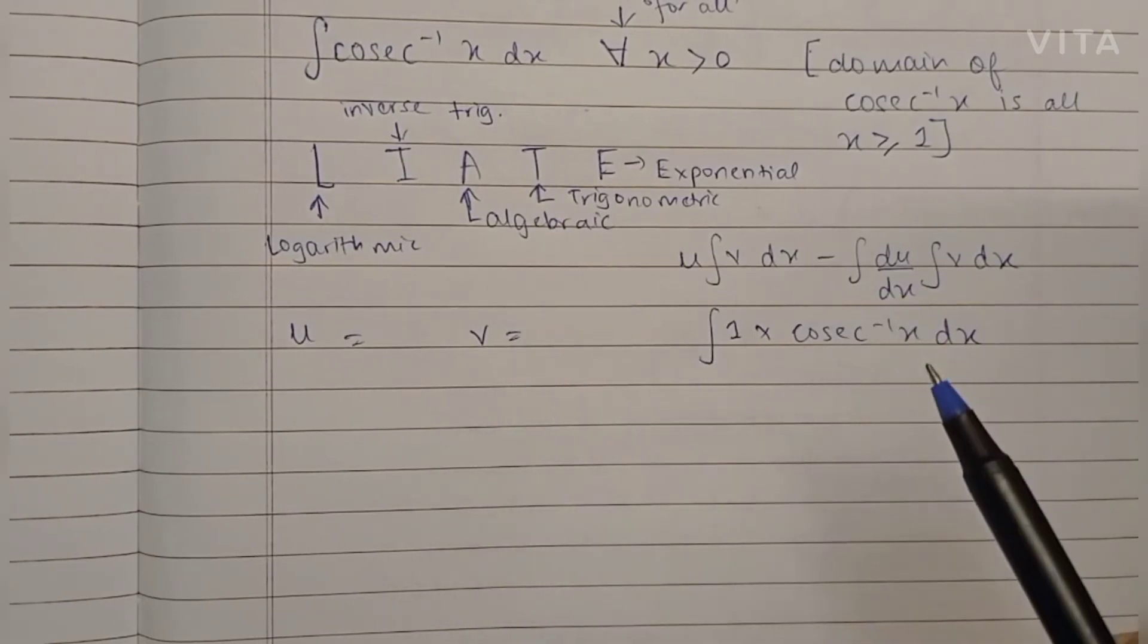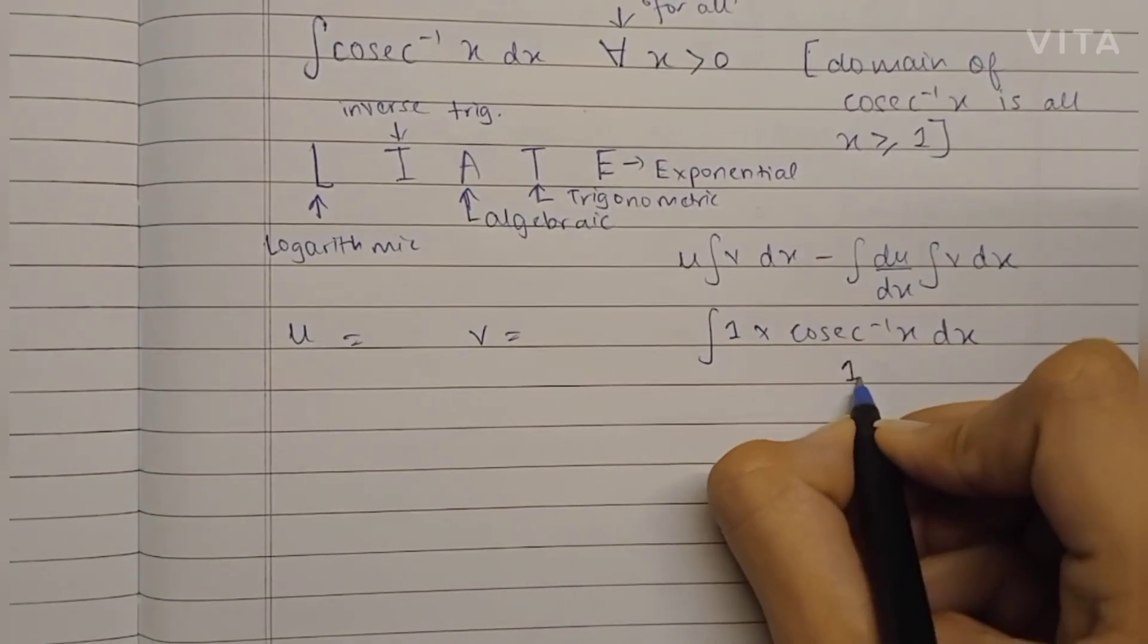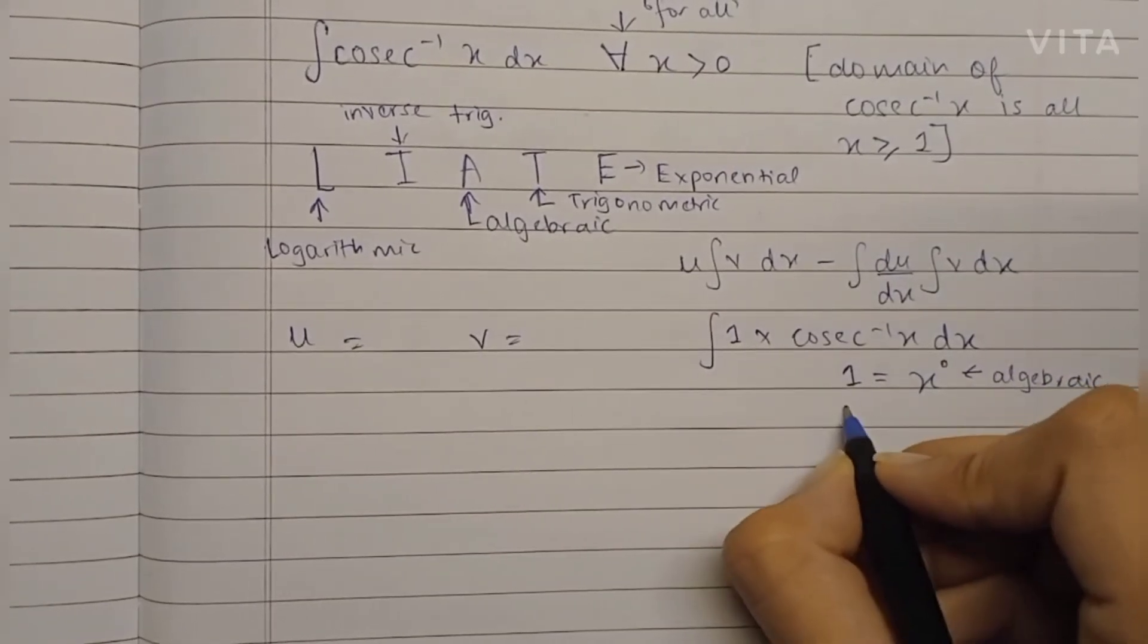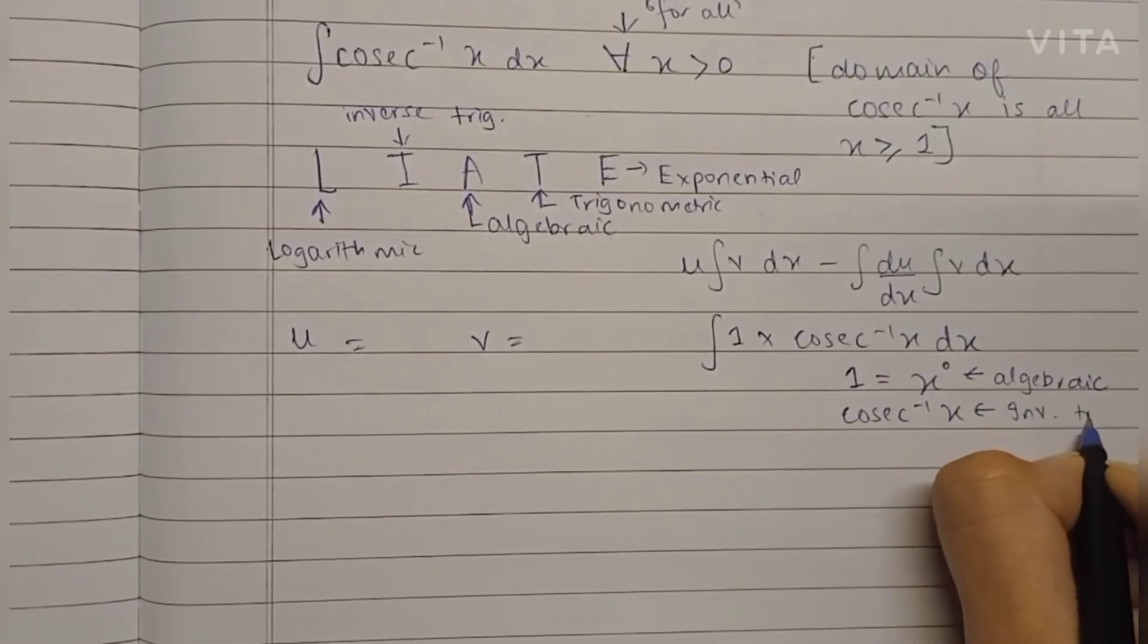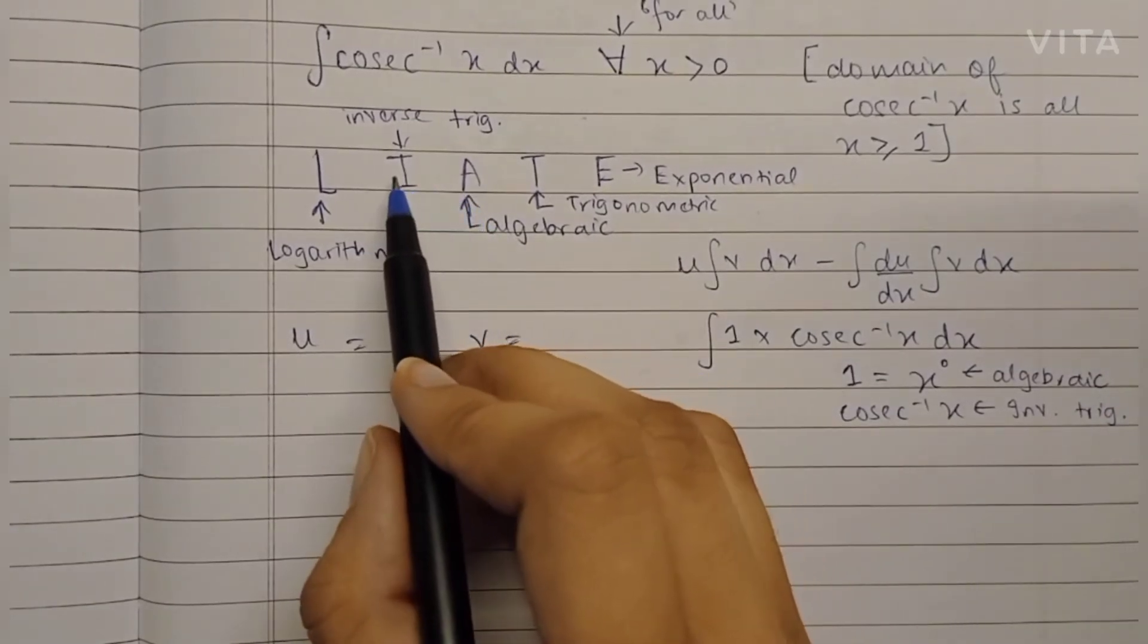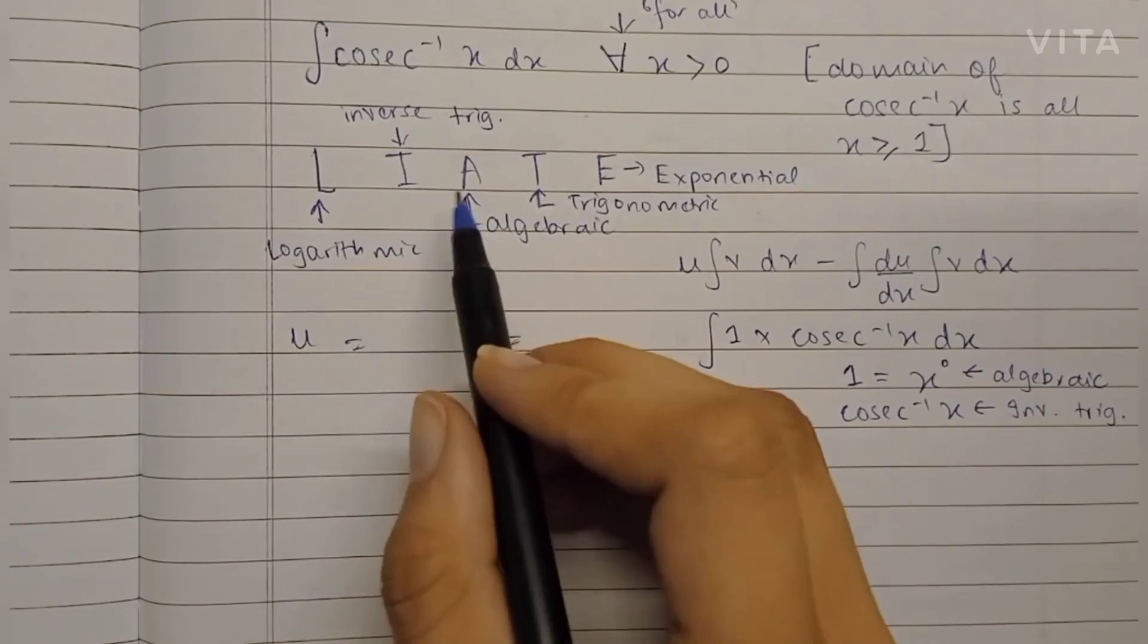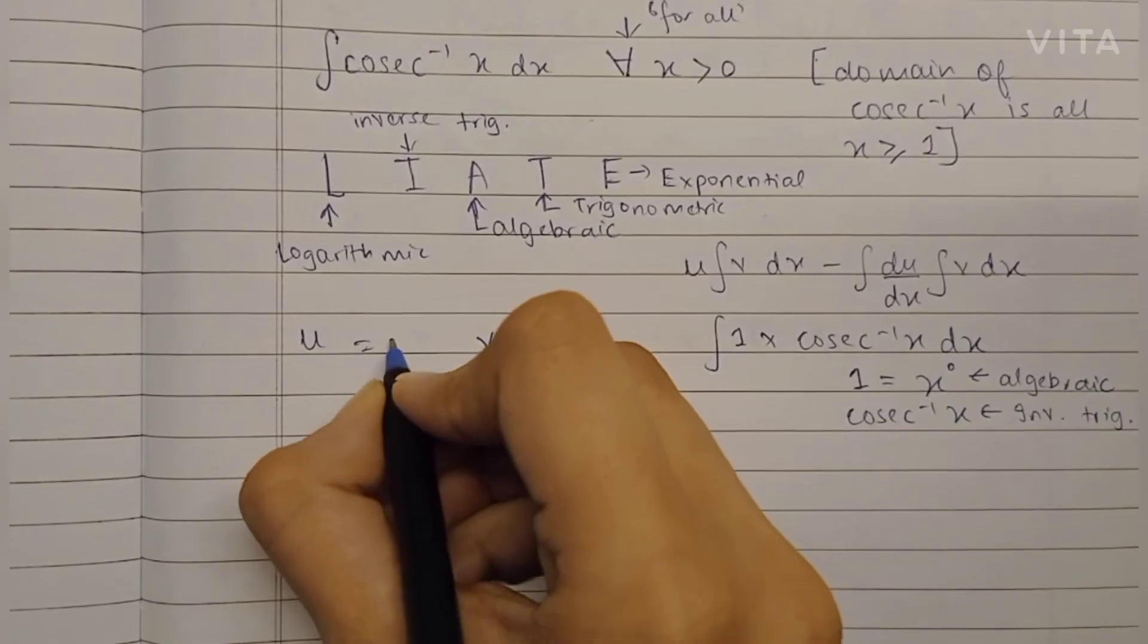Let's see. Here we have two terms: one and cosec⁻¹(x). One can be written as x raised to 0 and thus can be named as the algebraic term, and we know that cosec⁻¹(x) is the inverse trigonometric term. Now, algebraic comes after inverse trigonometric in the LIATE rule, which means that we will keep the inverse trigonometric term as u and the algebraic term as v. Thus, u becomes cosec⁻¹(x) and v becomes one.